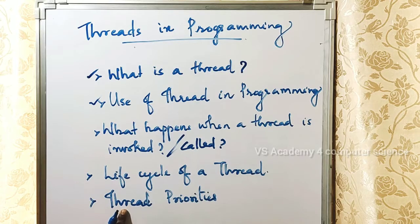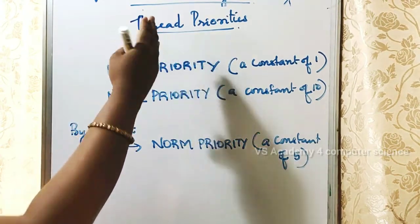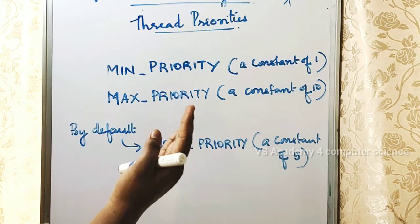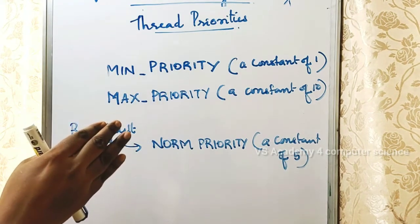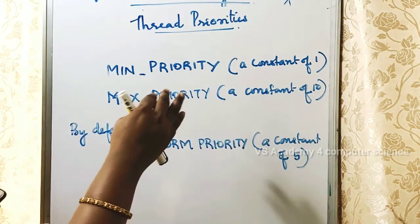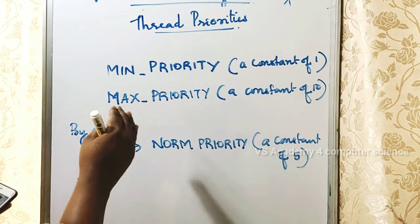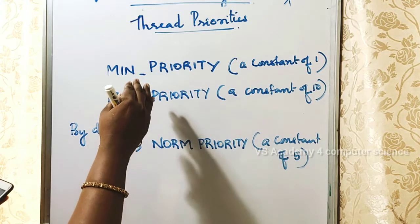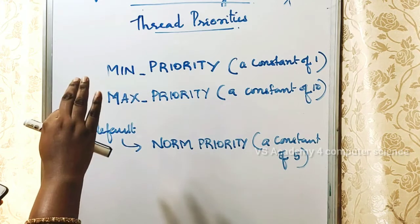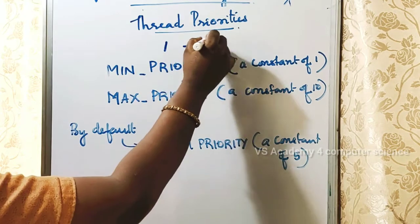Finally, thread priorities. By the word meaning of priority — it helps the operating system determine the order in which threads are to be scheduled. In Java, thread priorities range between 1 to 10.